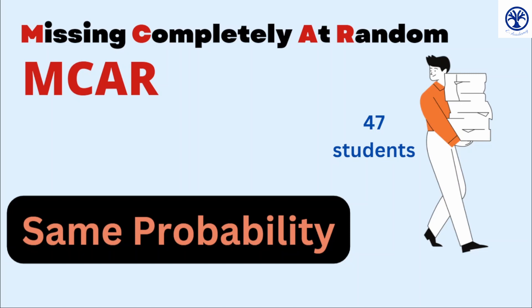Why? Because the probability of losing any test was the same and wasn't related to the scores on the test or questions or anything else. The probability was absolutely the same for each and every one of the 50 tests — that is 1 by 50 for every test of being considered as a missing test.